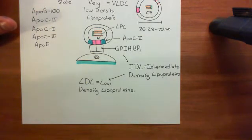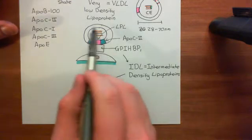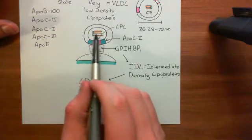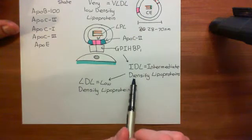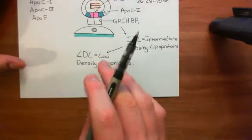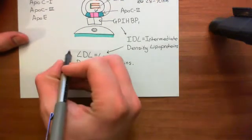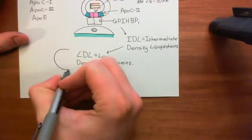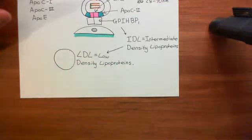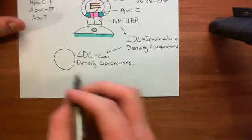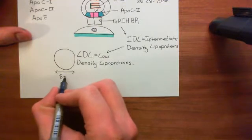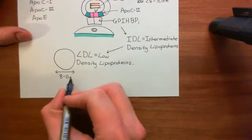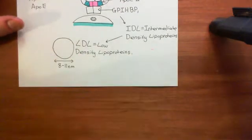The liver is producing these very low-density lipoproteins. As the VLDLs gradually become depleted of triacylglycerols, they gradually start to be called intermediate-density lipoproteins, and then when they become really completely depleted of triacylglycerols, they become known as low-density lipoproteins. Low-density lipoproteins are much smaller than the very low-density lipoproteins, with a diameter between 8 and 12 nanometres.